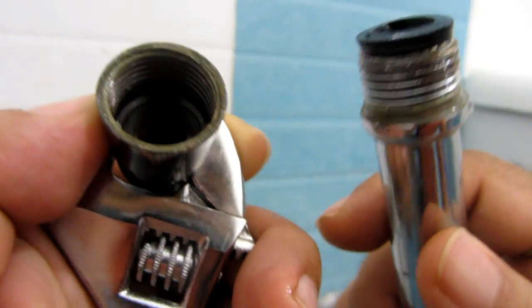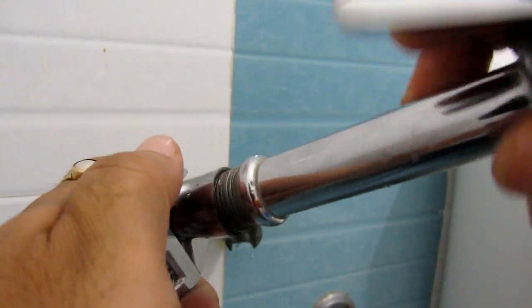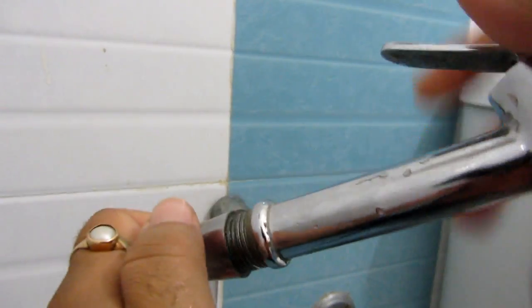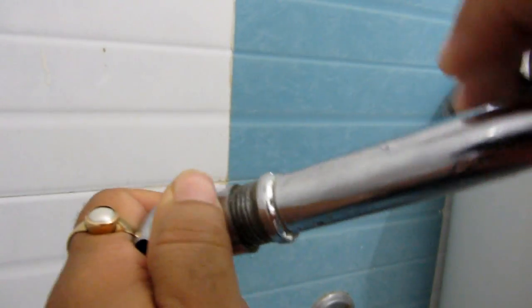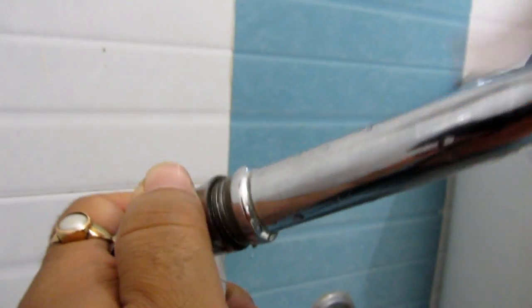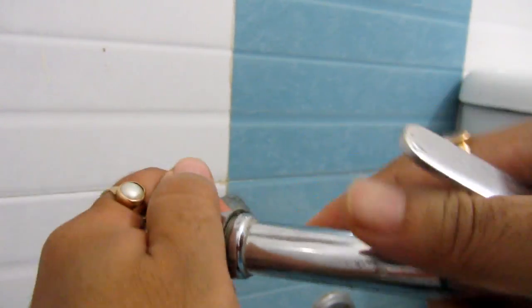So what you need to do is probably just tighten this. Let's see if this works. Otherwise what you'll have to do is change the washer which is inside this particular faucet. I'm fixing it back.